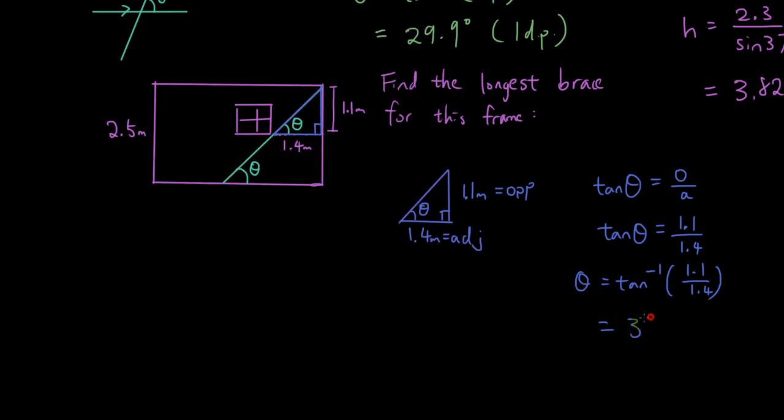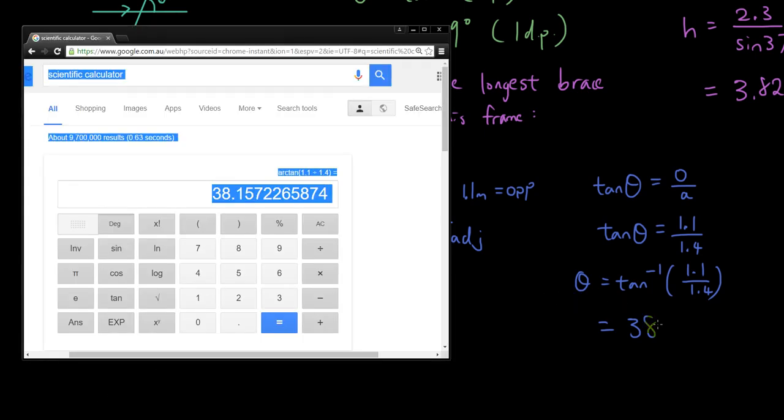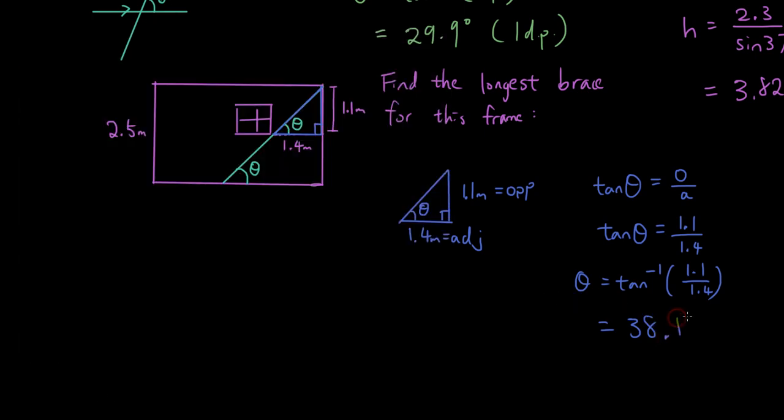So 38 degrees. What was that? 38 point something. 38.16 degrees. Round it to 2 decimal places, 3 decimal places.